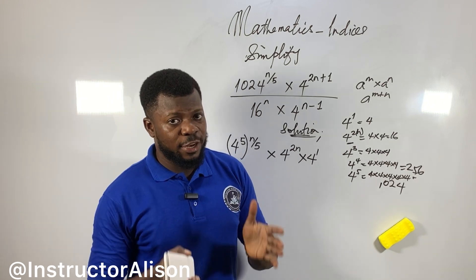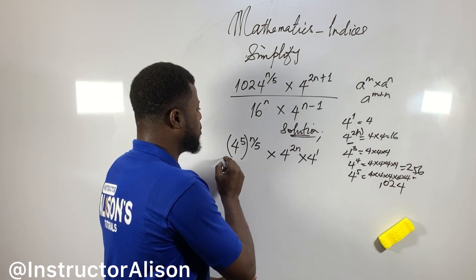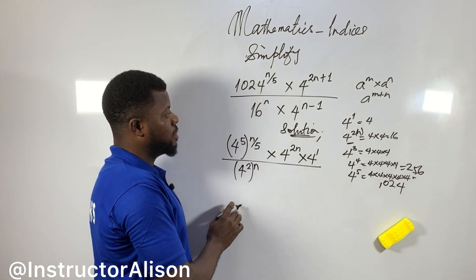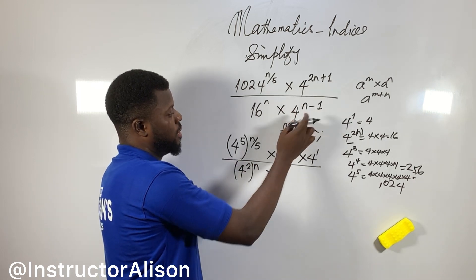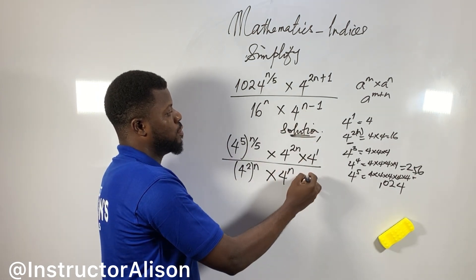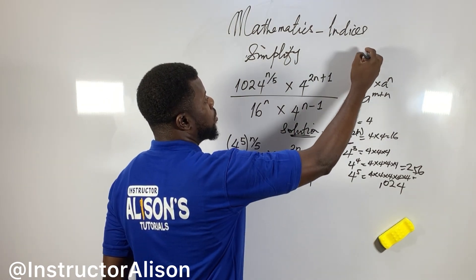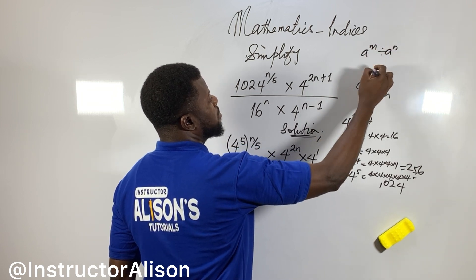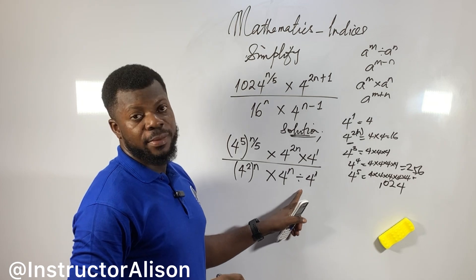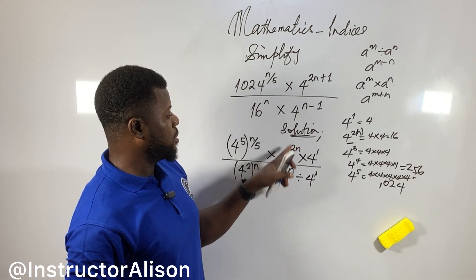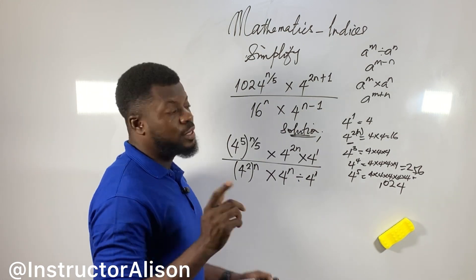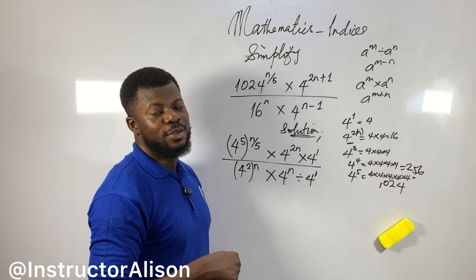For the denominator: 16 = 4 raised to the power of 2, so 16^n = 4^(2n). Leave the n there. For 4 to the power of n minus 1, when it's minus you use the division sign — division law of indices: a raised to the power of m divided by a raised to the power of n, when the base is the same, take one of the bases and subtract the powers. So 4^n divided by 4^1 gives 4^(n-1). That first stage is done.